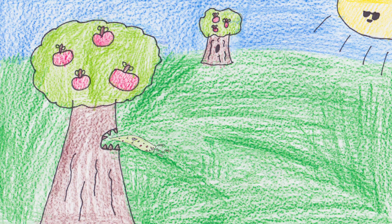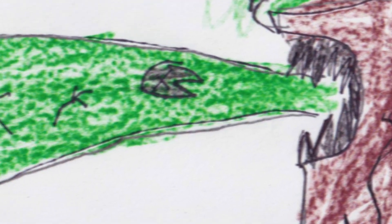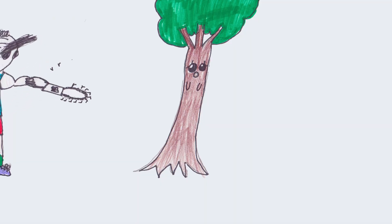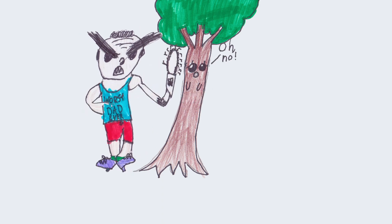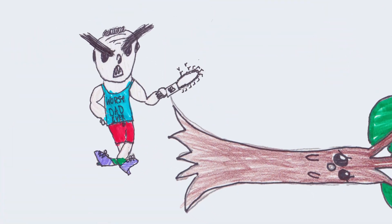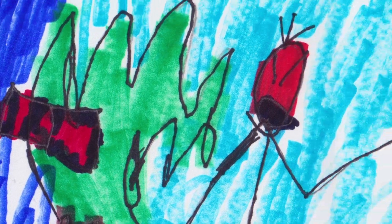The tree got sick and threw up. Its vomit covered a man's cabin. The man was angered and cut down the tree with a chainsaw. He then cut down all of the other trees.